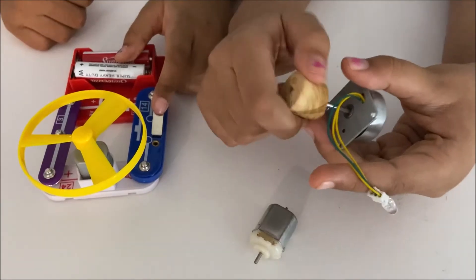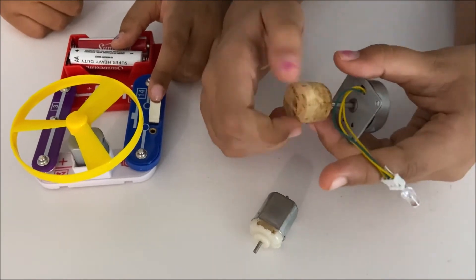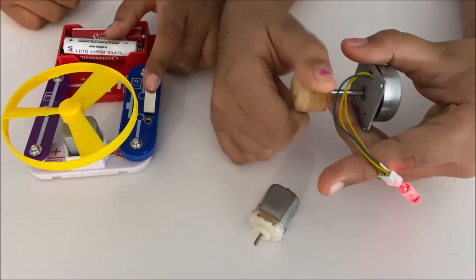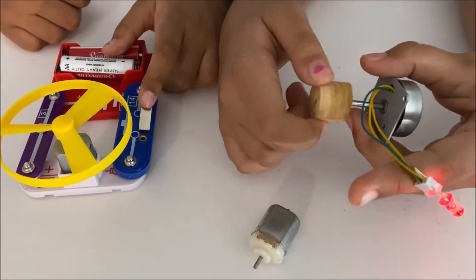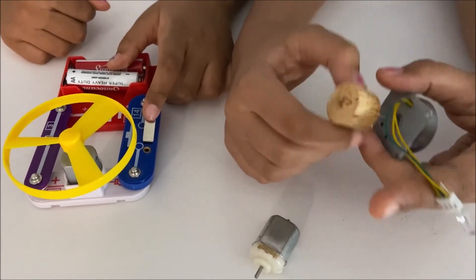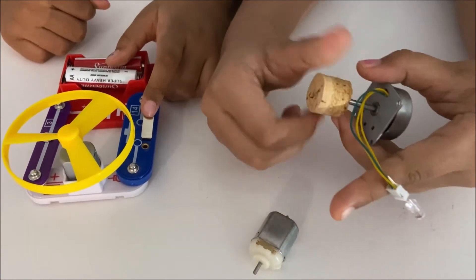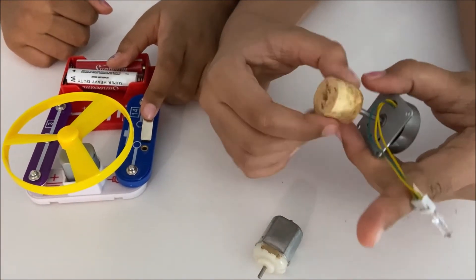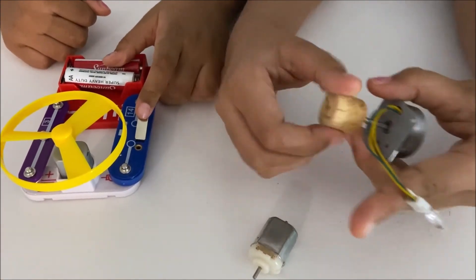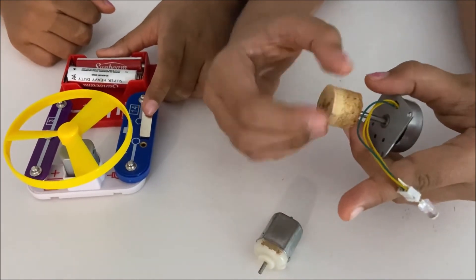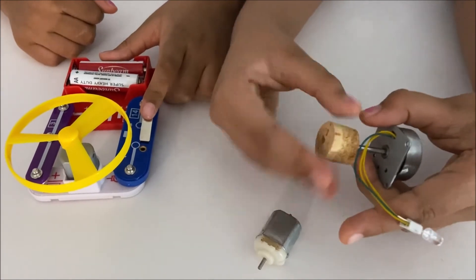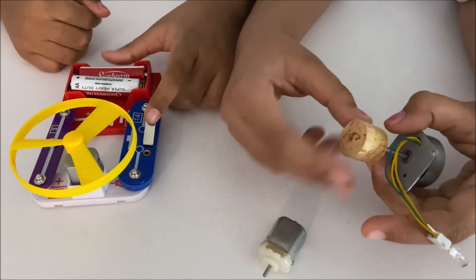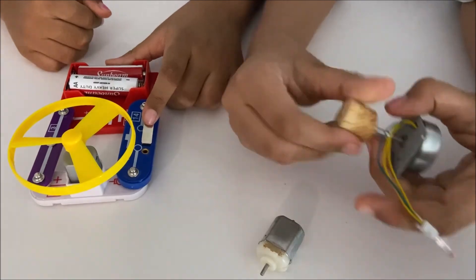Now we built a circuit and learned how a generator generates electricity and also learned how a motor works. I hope you learned how a DC motor works and how a generator generates electricity. Thanks for watching, please subscribe to our channel Kids Girl for more fun science experiments. See you next time, bye!